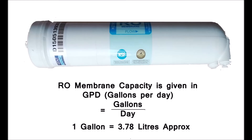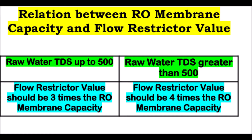1 gallon equals approximately 3.78 liters. The value of the flow restrictor should be 3 times the membrane capacity when the TDS of water we have to filter is less than 500. If the TDS of water is more than 500, then the flow restrictor value should be 4 times the membrane capacity.